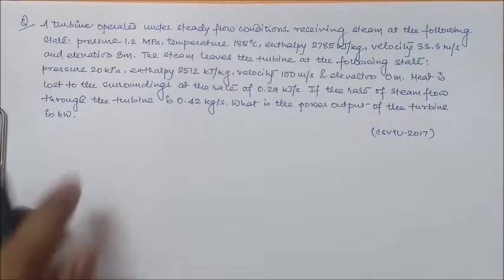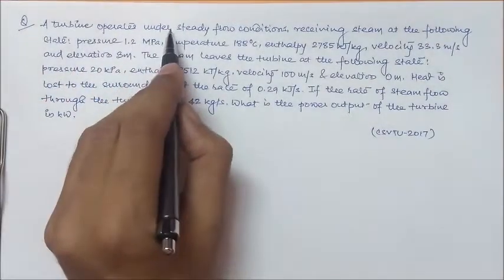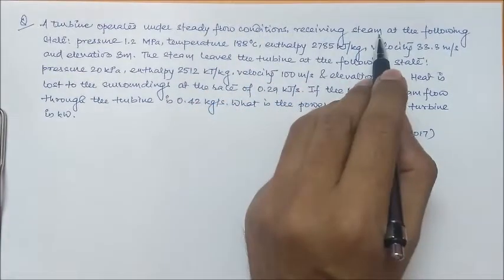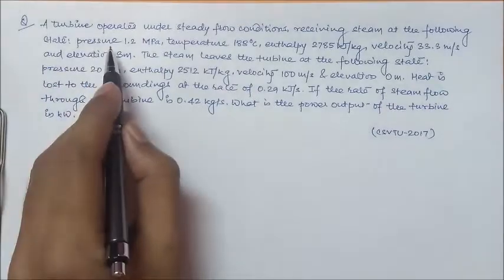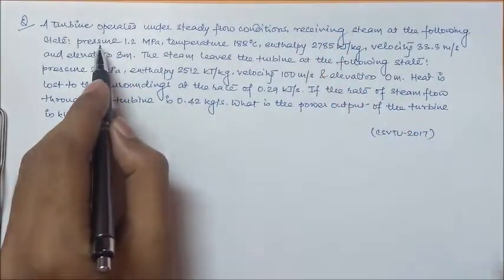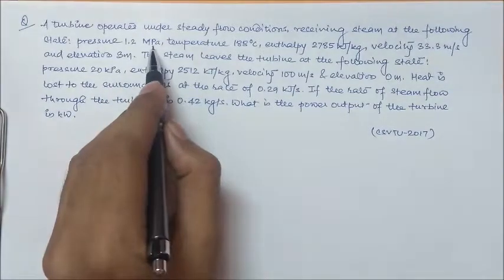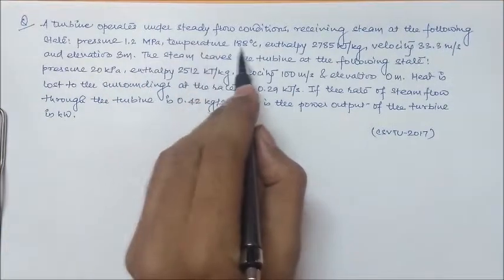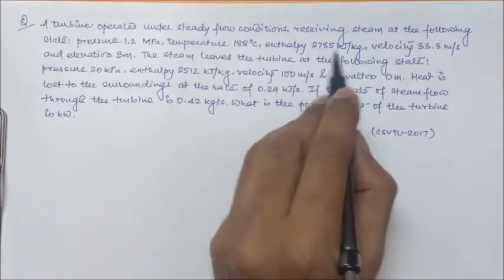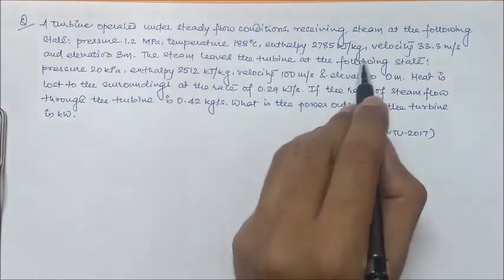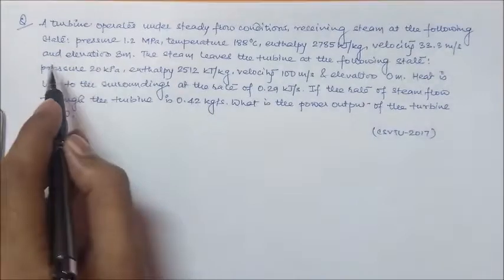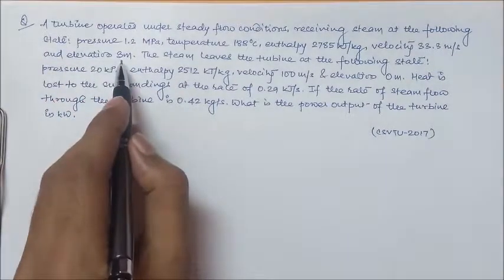The question is like this: a turbine operates under steady flow conditions receiving steam at the following state: pressure 1.2 megapascal, temperature 188 degrees Celsius, enthalpy 2785 kilojoule per kg, velocity 33.3 meter per second, and elevation 3 meter.